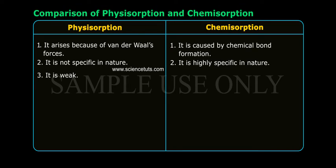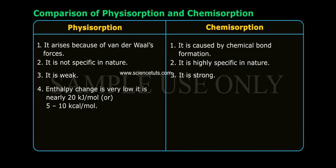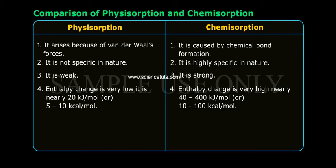3. Physisorption is weak. Chemisorption is strong. 4. In physisorption, enthalpy change is very low, nearly 20 kilojoules per mole, or 5 to 10 kilocalories per mole. In chemisorption, enthalpy change is very high, nearly 40 to 400 kilojoules per mole.